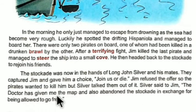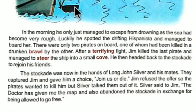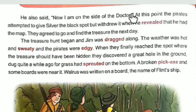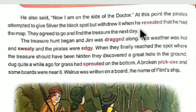Silver said to Jim that the doctor had given him the map and also abandoned the stockade in exchange for being allowed to go free. At that point the pirates attempted to give Silver the black spot, but withdrew it when he revealed that he had the map. They agreed to go and find the treasure the next day. The pirates had considered Silver no longer their leader, but when he showed the treasure map they dropped the idea.